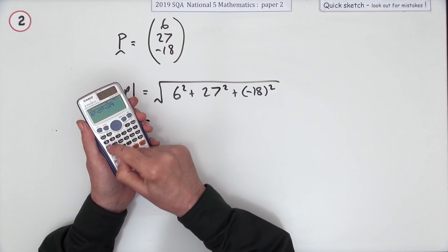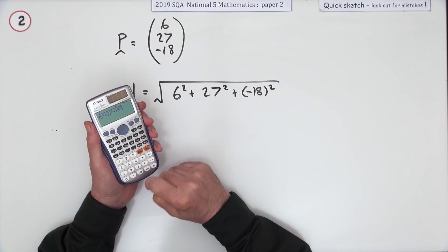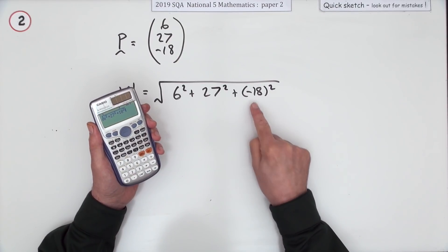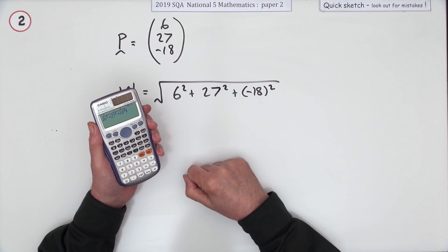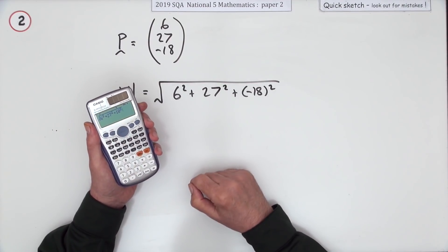Inside of a bracket before you square it, otherwise the calculator will think you're subtracting the square of 18. But of course you don't need to put that in at all because when you square something it always ends up positive anyway.